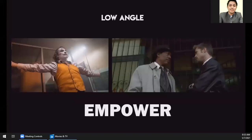Next is the low angle or worm's eye view angle. This low angle is used to empower. In videos, when they want to show that a character is strong or powerful, they lower the camera so the angle is low — the audience will feel that the character is powerful. The camera is placed below and angled upward toward the subject — that is a low angle shot, and it shows that a character is powerful. The worm's eye view is when the camera is placed extremely low, on the floor.